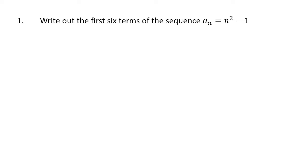So when we have an explicit formula like this, all we're being asked to do here is figure out what a1, a2, a3, and so on are. We're talking about the first six terms, so we're going all the way up to a6. But in theory, this sequence goes on forever.